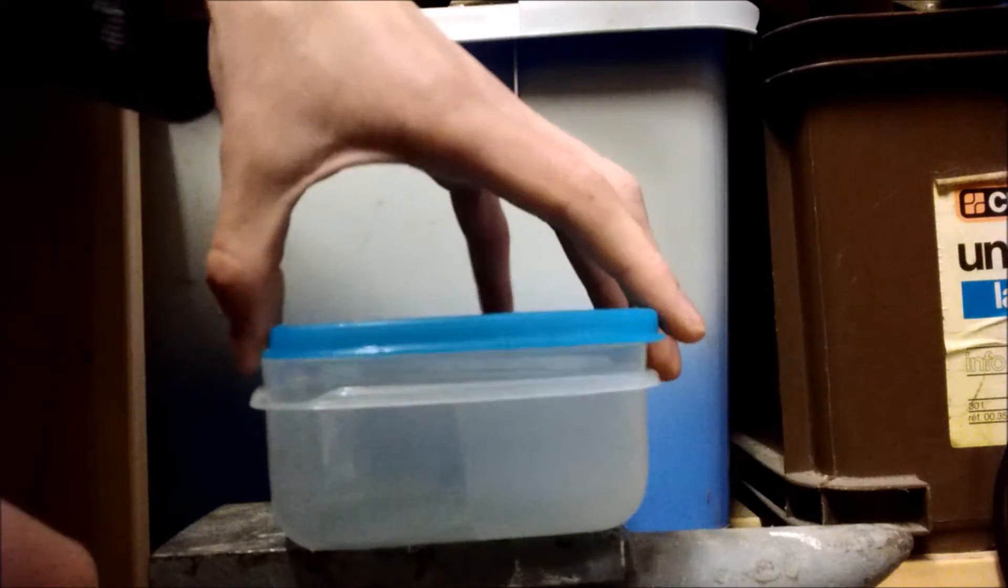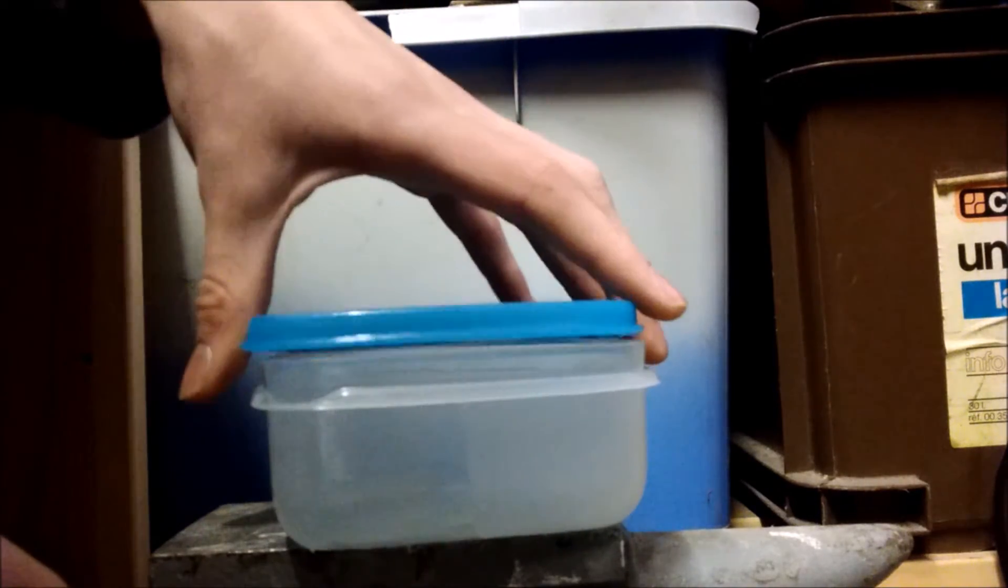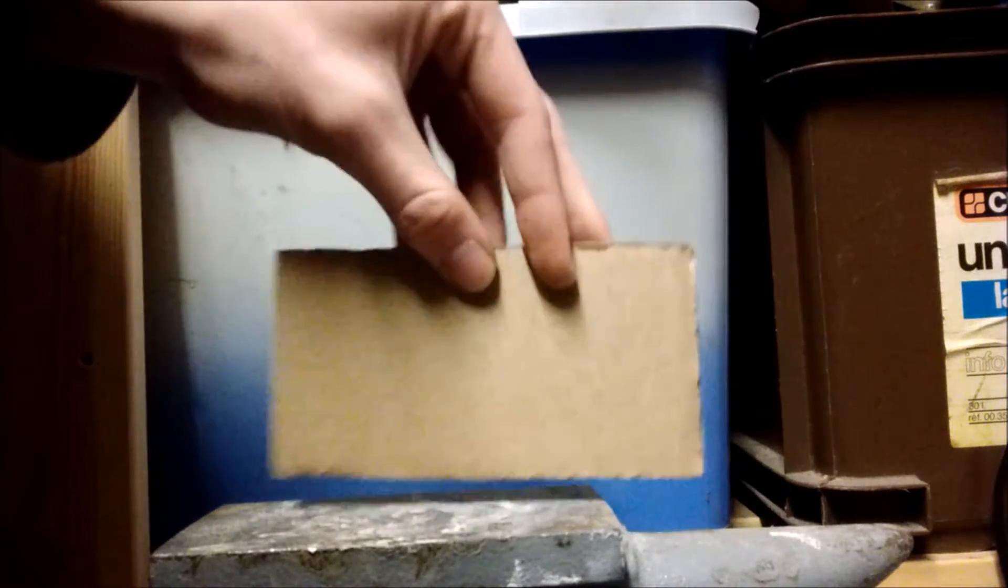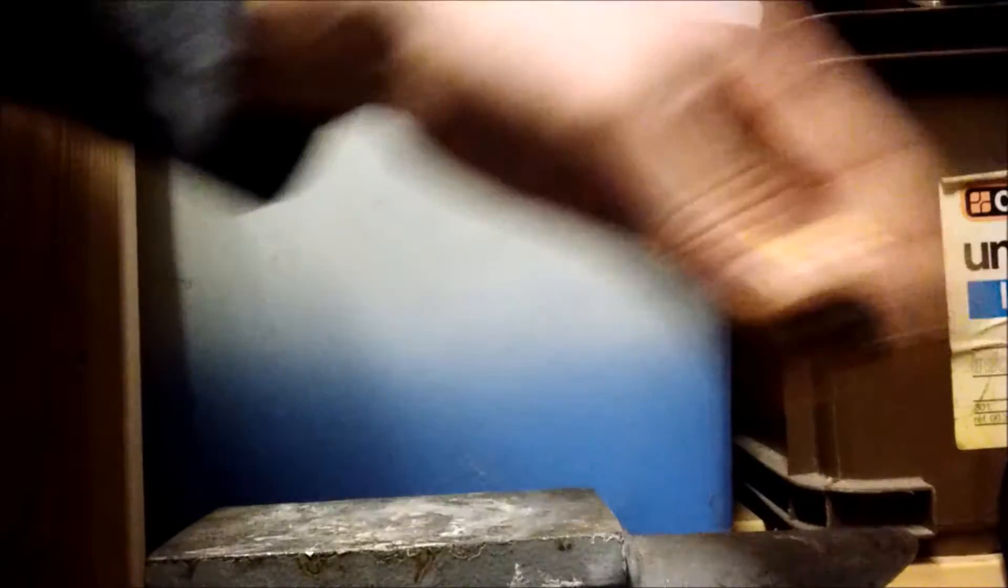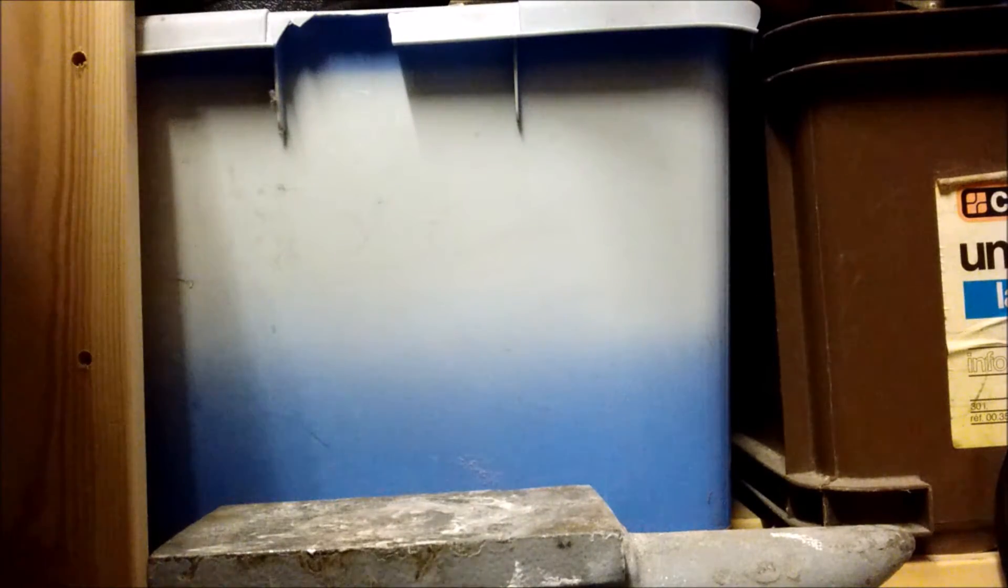So, what you really need to make a simple one of these is just a Tupperware container, a piece of cardboard, fairly simple, some glue, again fairly simple, and you need something to act as the desiccant.